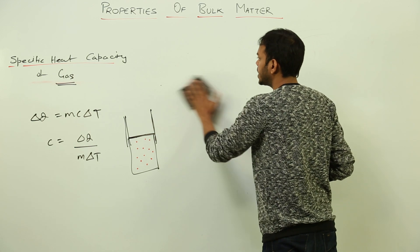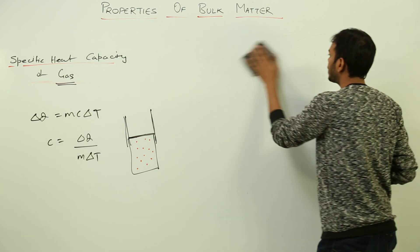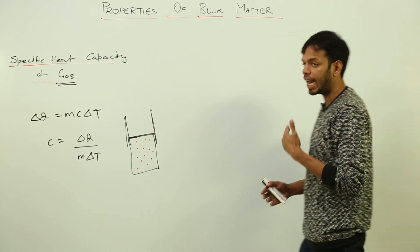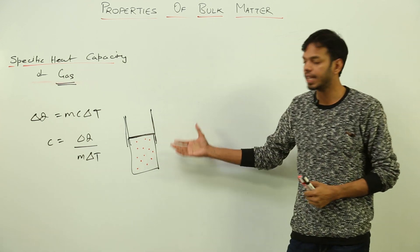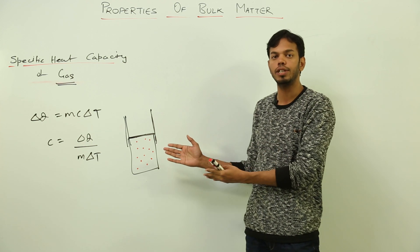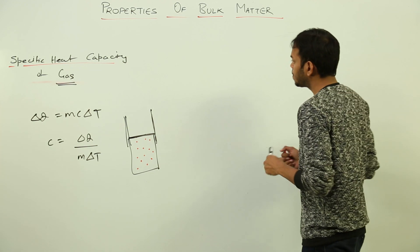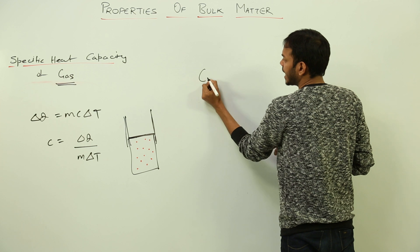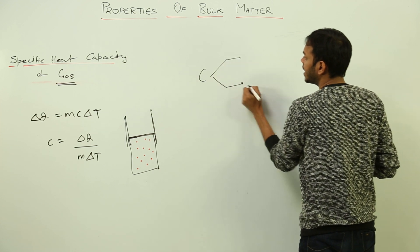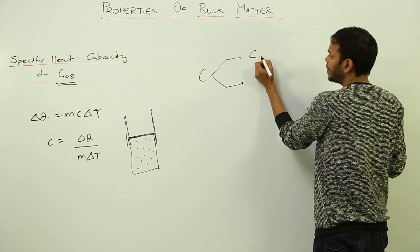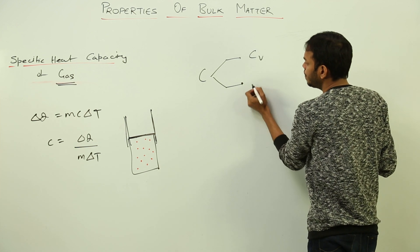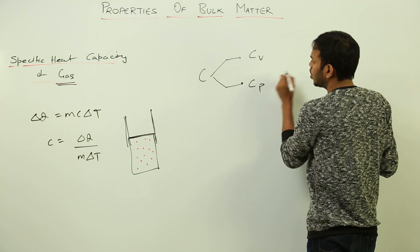Similarly, there are other state variables or system variables like pressure and volume which can be kept constant while giving heat to the gas. So specific heat capacity can be referred to in two different ways: specific heat capacity at constant volume and specific heat capacity at constant pressure.